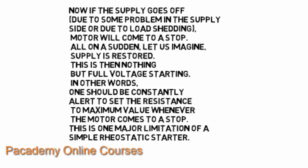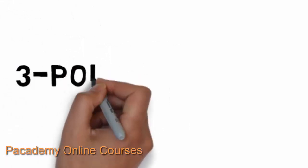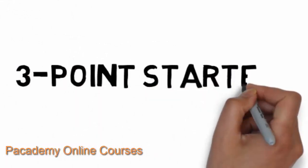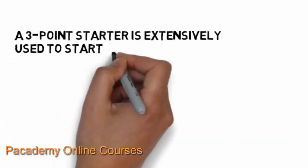One drawback of this simple starter is that if the supply goes off due to a problem on the supply side or load shedding, the motor comes to a stop. If the supply is then restored, it applies full voltage immediately, causing high starting current again. The operator must be constantly alert to reset the resistance to the maximum value whenever the motor comes to a stop. This is a major limitation of the simple rheostatic starter.